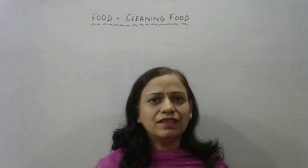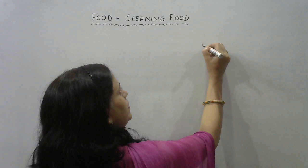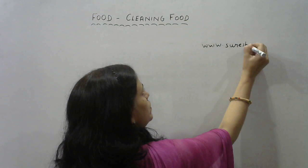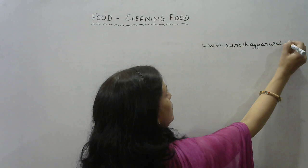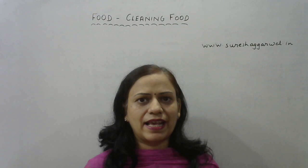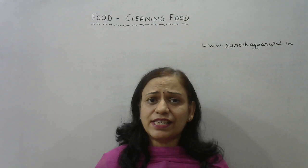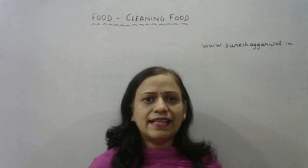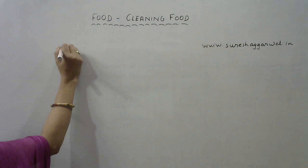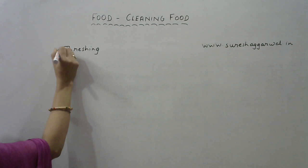The PDF has already been uploaded on the website www.sureshagarwal.in, so you can visit and download it from there. Moving ahead with today's video — once the crop is harvested from the fields, the grains need to be separated. This process is known as threshing.